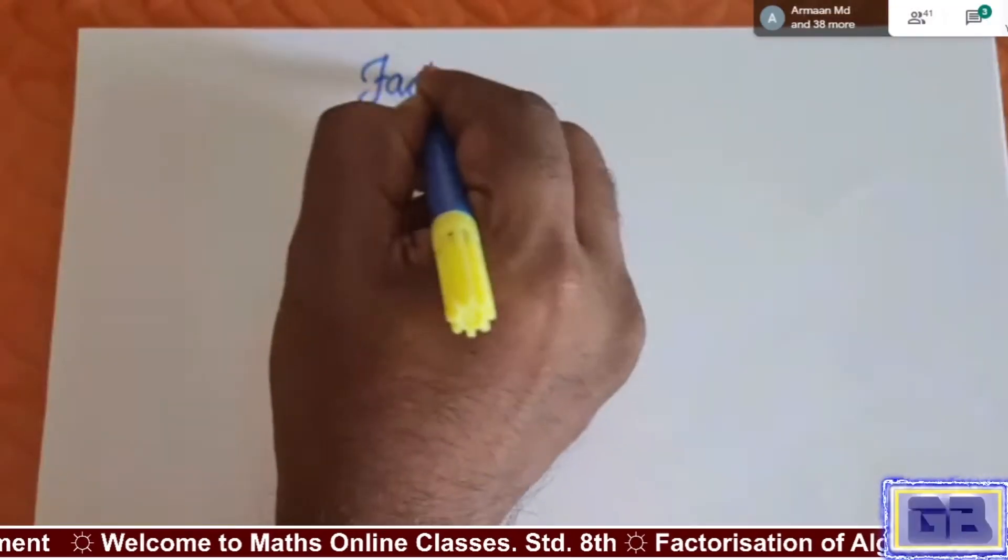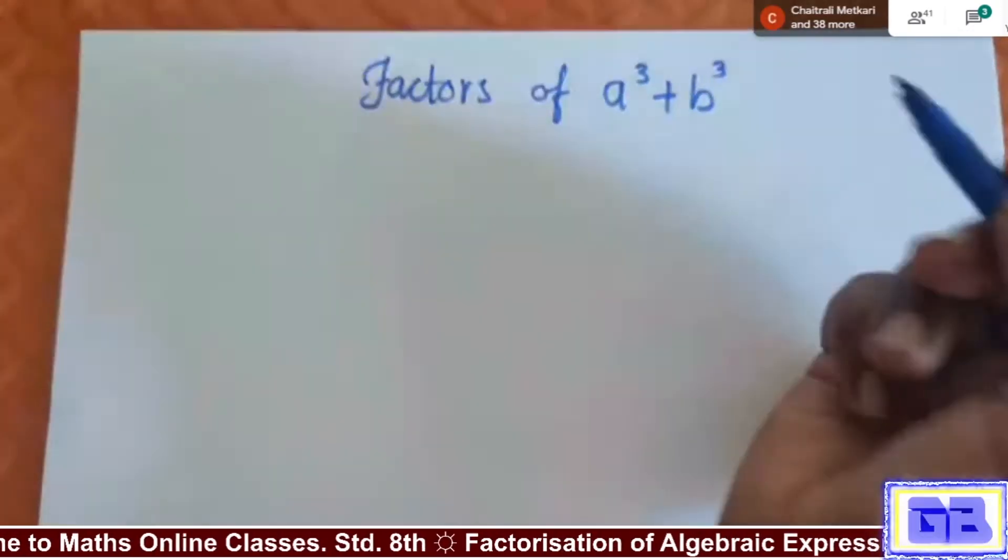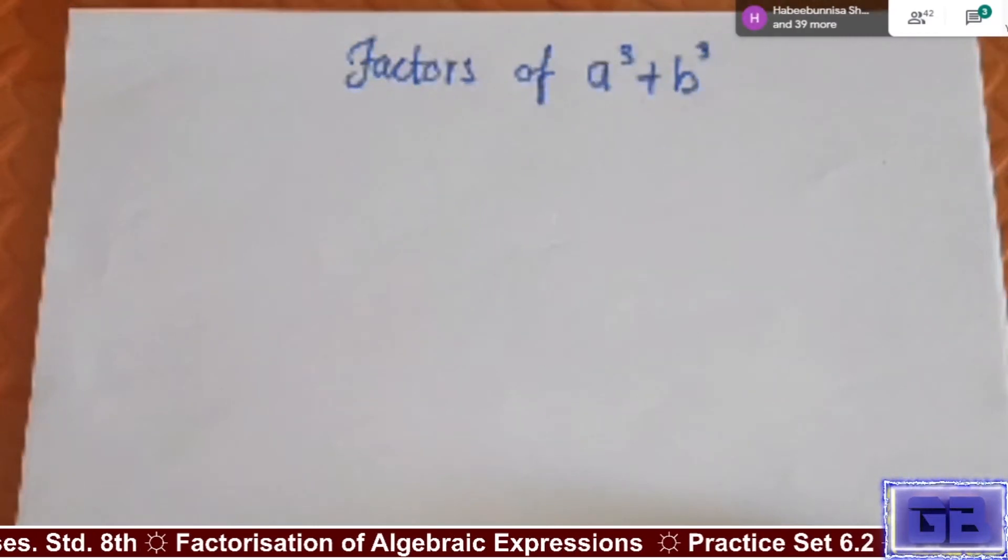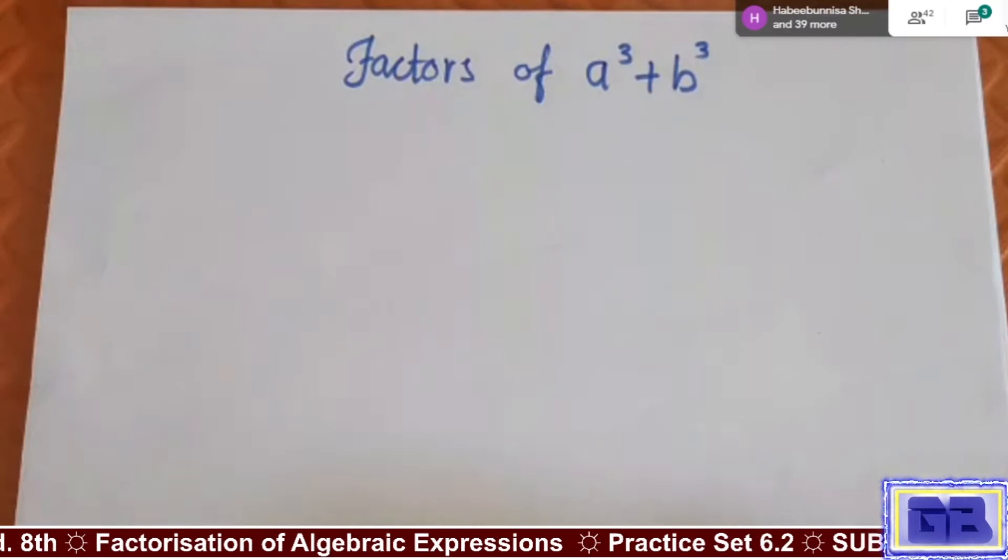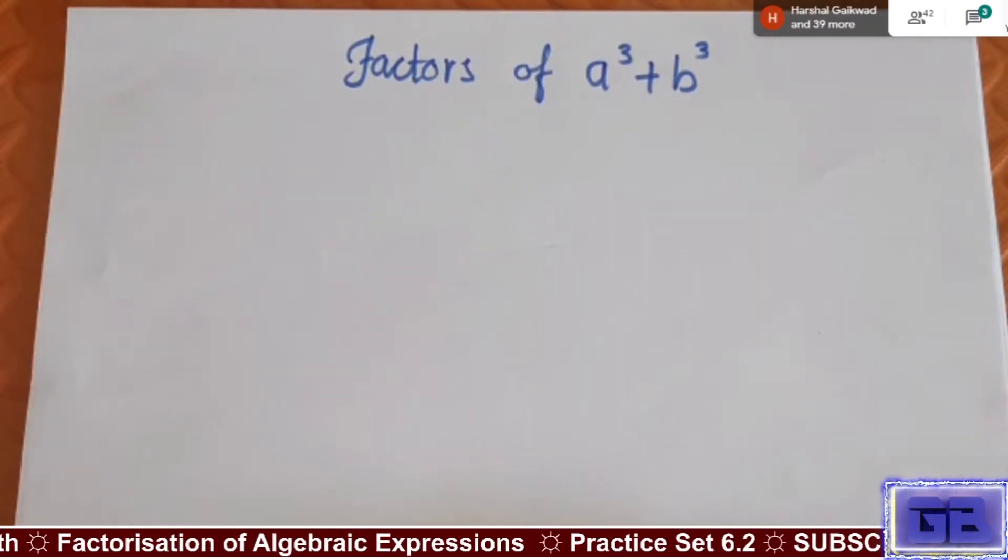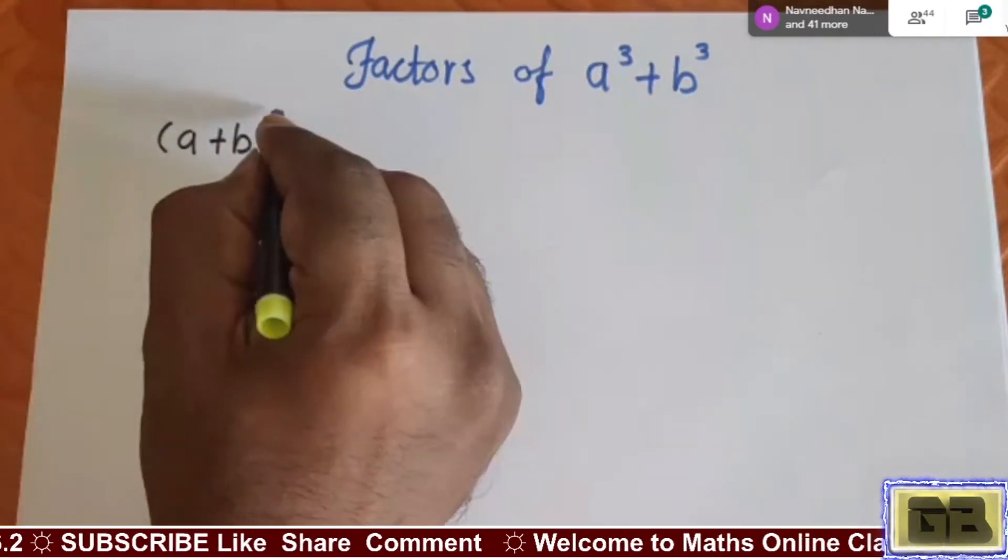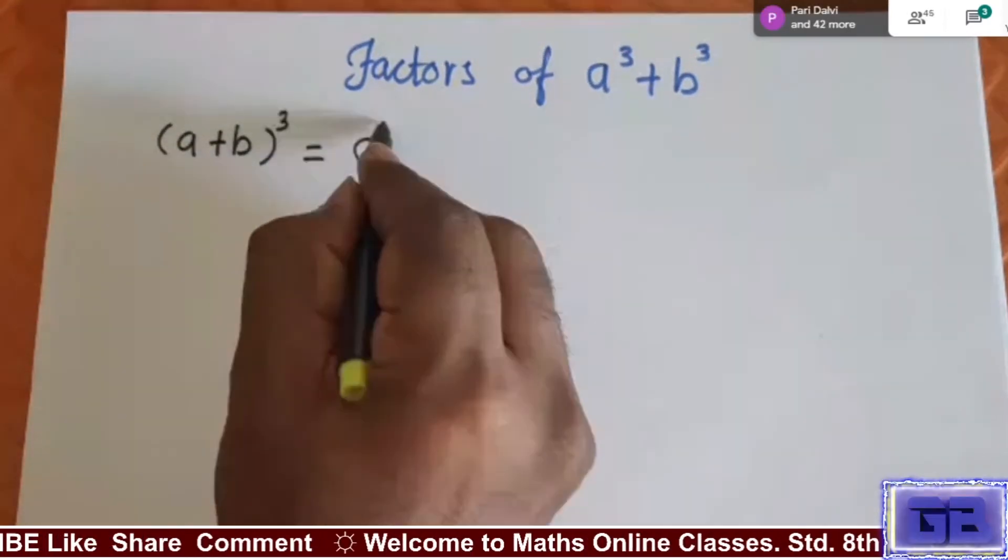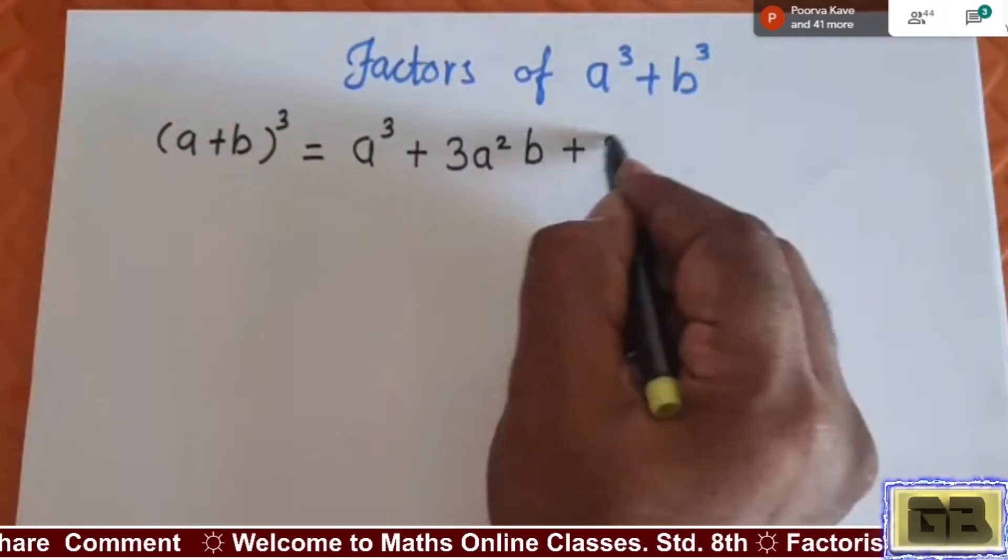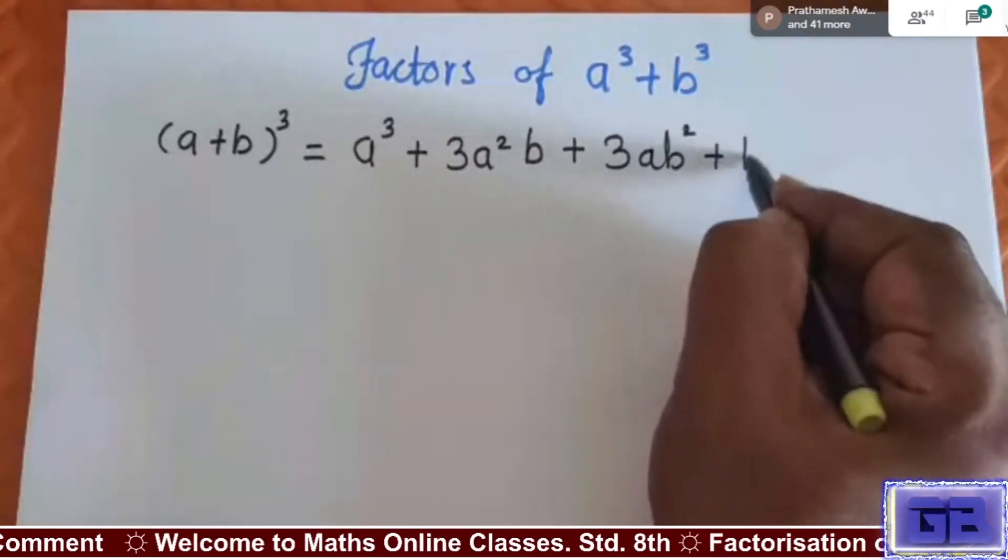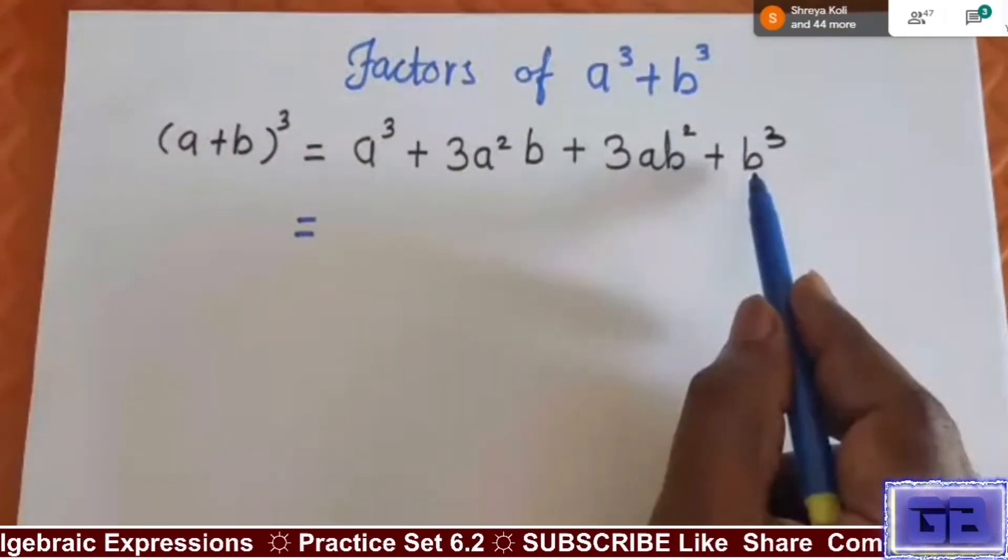Factors of a³ + b³. In previous topic we have learned one formula that we have to use here to derive another formula. And what was that formula? (a+b)³, a³ + 3a²b + 3ab² + b³.